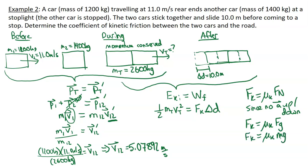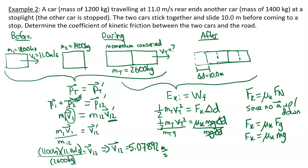Dividing both sides by M_total·g·Δd — the total mass cancels — leaving μk = Vt² / (2·g·Δd). Note: we don't need mass for the energy part, but we do need it for the momentum part. Substituting Vt = 5.07892 m/s, g = 9.81 m/s², and Δd = 10 m: μk = (5.07892)² / (2 × 9.81 × 10).